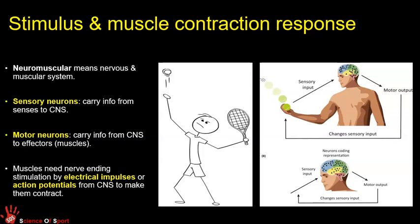To perform those actions, we take in stimulus information, make a decision, and send instructions to our muscles — that involves our nervous system. We have different senses: sight, audition, touch, and others. For example, throwing a ball up in a tennis serve, information about how high it's been thrown or how heavy it is travels from the eyes or fingers along sensory neurons to the brain. Sensory neurons carry information from our senses to the central nervous system.